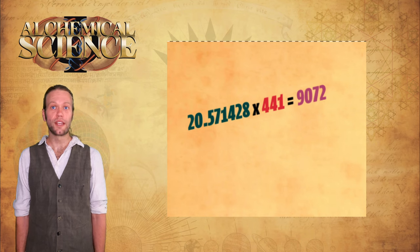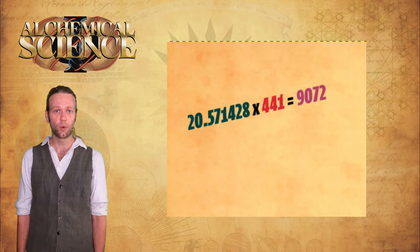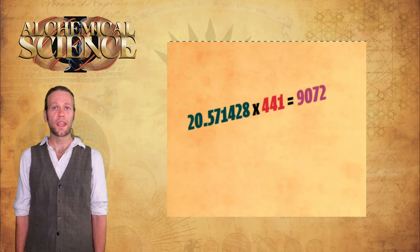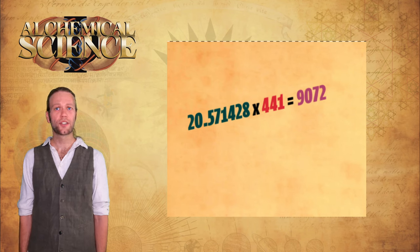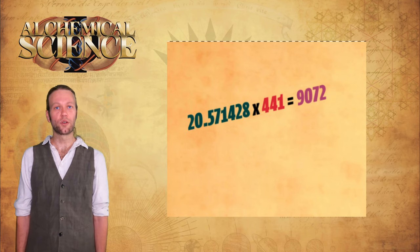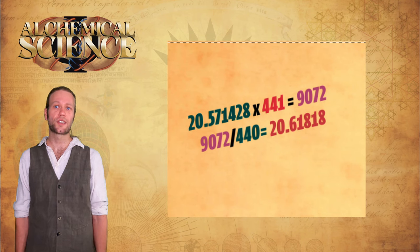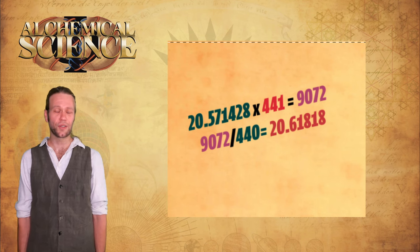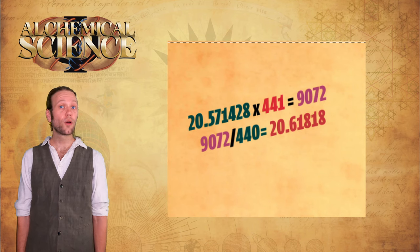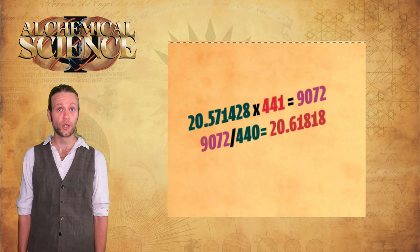Going back to the base length of the pyramid Khufu again now, we can see how the root cubit and the royal cubit are used together more clearly. One root cubit equals 20.571428 inches times 441 equals 9072 inches, which is the outer base length of Khufu. 9072 inches divided by 440 equals 20.61818 inches, 1 royal cubit. Although the initial calculations are made in root cubits derived directly from the lambda sequence, the adjusted calculations for the real world construction would be converted to royal cubits.